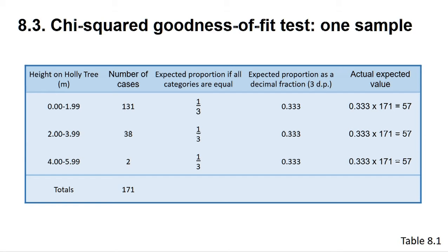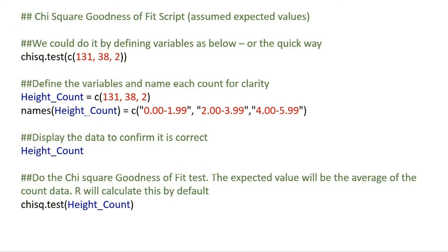That is, since we have three categories, we would expect a third of the insects to be found in each zone. This is the script for the second test, where we will not provide any expected proportions to R. Instead, R will assume that each category contains the same number of insects.